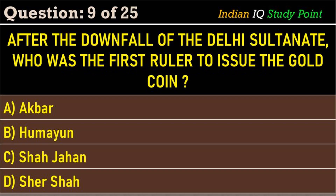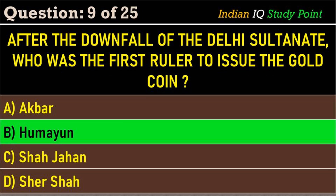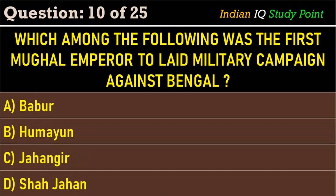Coming to the next question: after the downfall of the Delhi Sultanate, who was the first ruler to issue the gold coin? Option A. Akbar, B. Humayun, C. Shah Jahan, D. Sher Shah. And the correct answer is Option B. Humayun.